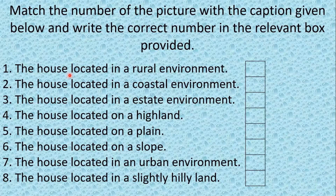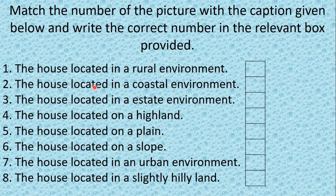I think you may have guessed the answers. Let's see. The house located in a rural environment — answer number 6. The house located in a coastal environment — number 2. The house located in an estate environment — number 4. The house located on a highland — number 1.